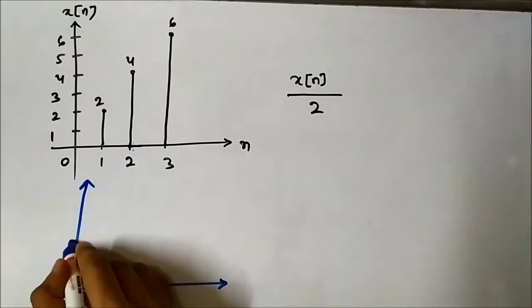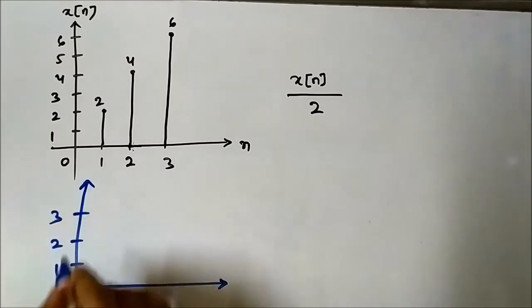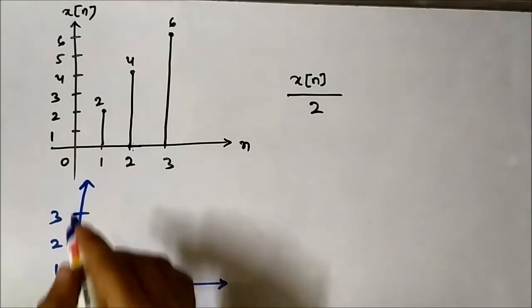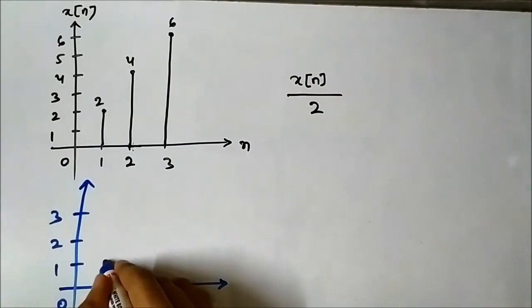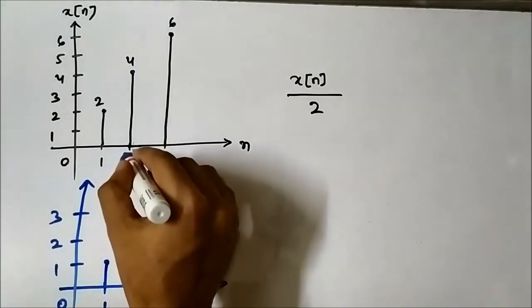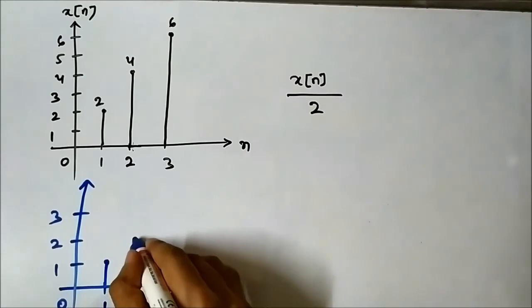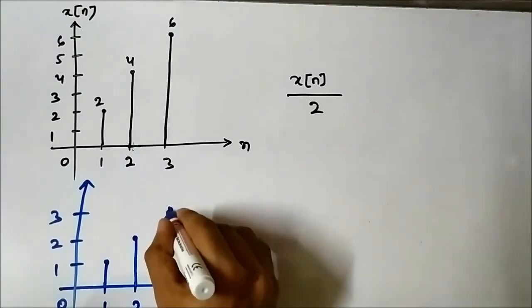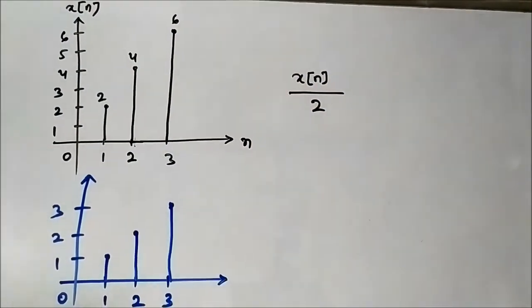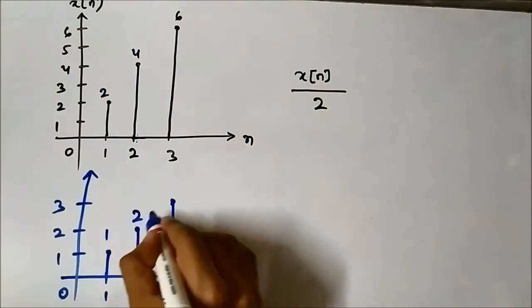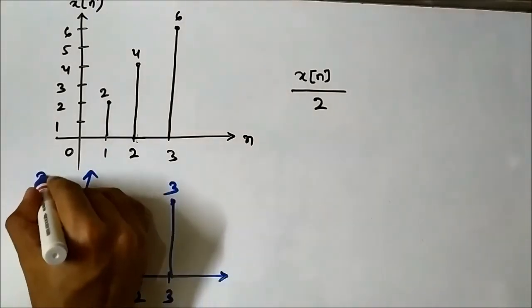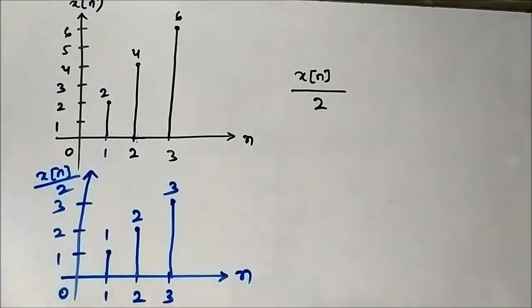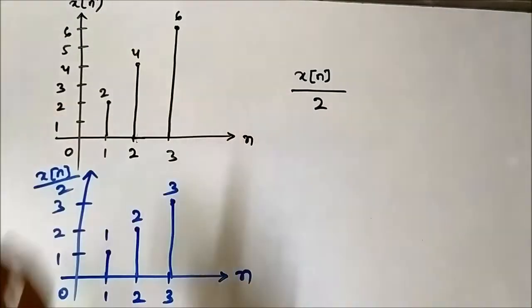Drawing the result on the axes with n going 1, 2, 3: at n=1 the original is 2 so here it is 1; at n=2 the original is 4 so here it is 2; at n=3 the original is 6 so here it is 3. Just multiply each of these points with the scaling factor x(n)/2. This is the second question.